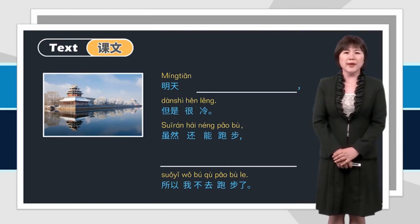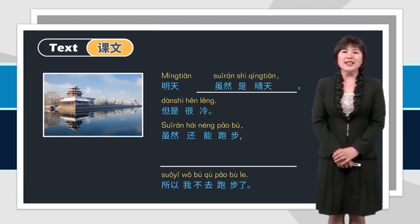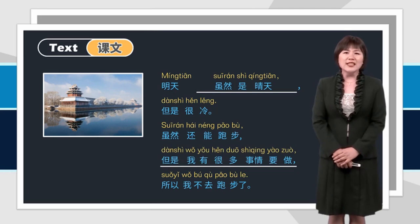If you were 冰冰, please use 虽然, 但是 to retell the dialogue. 明天虽然是晴天, 但是很冷. 虽然还能跑步, 但是我有很多事情要做, 所以我不去跑步了.